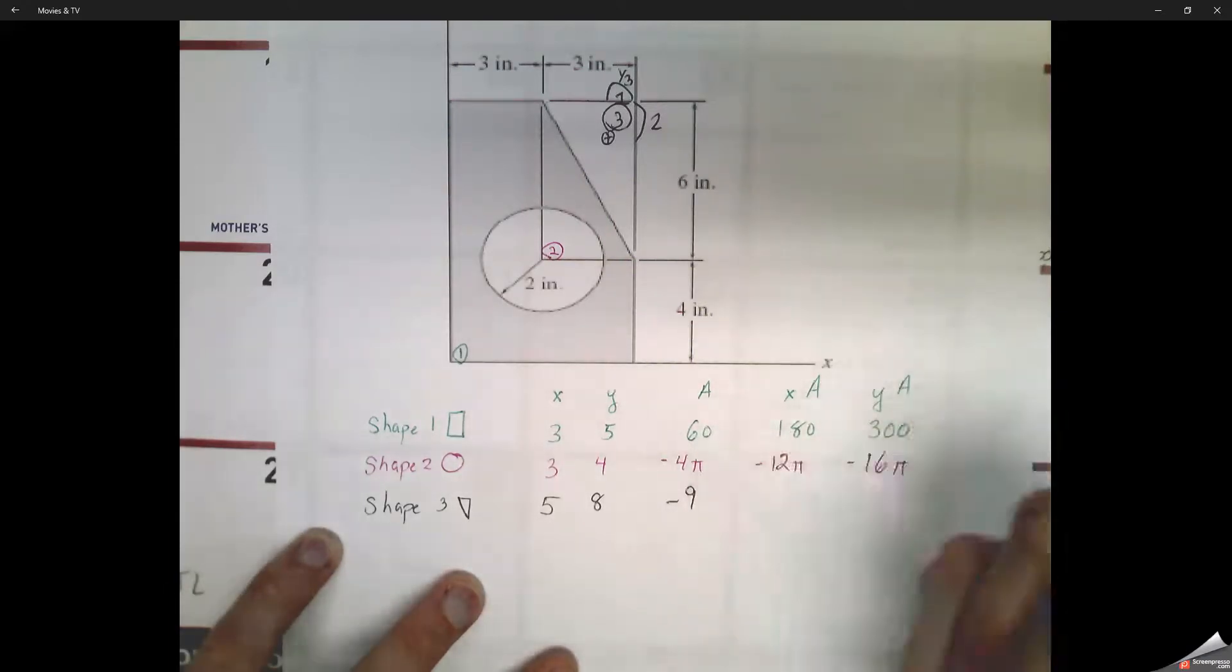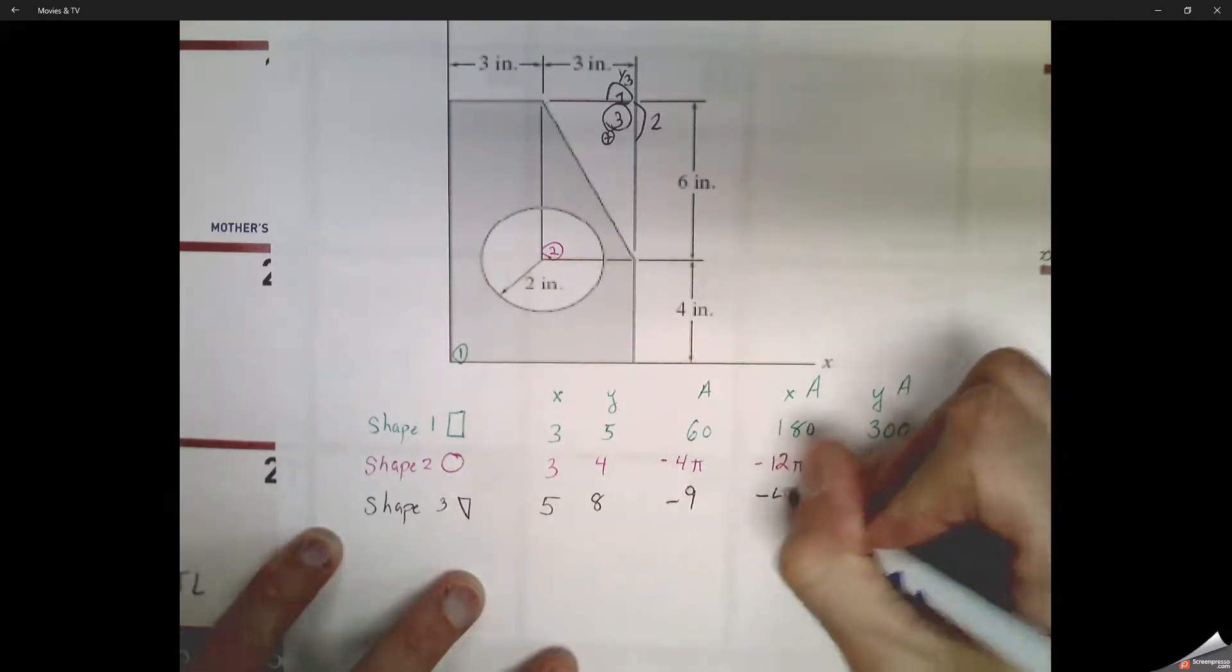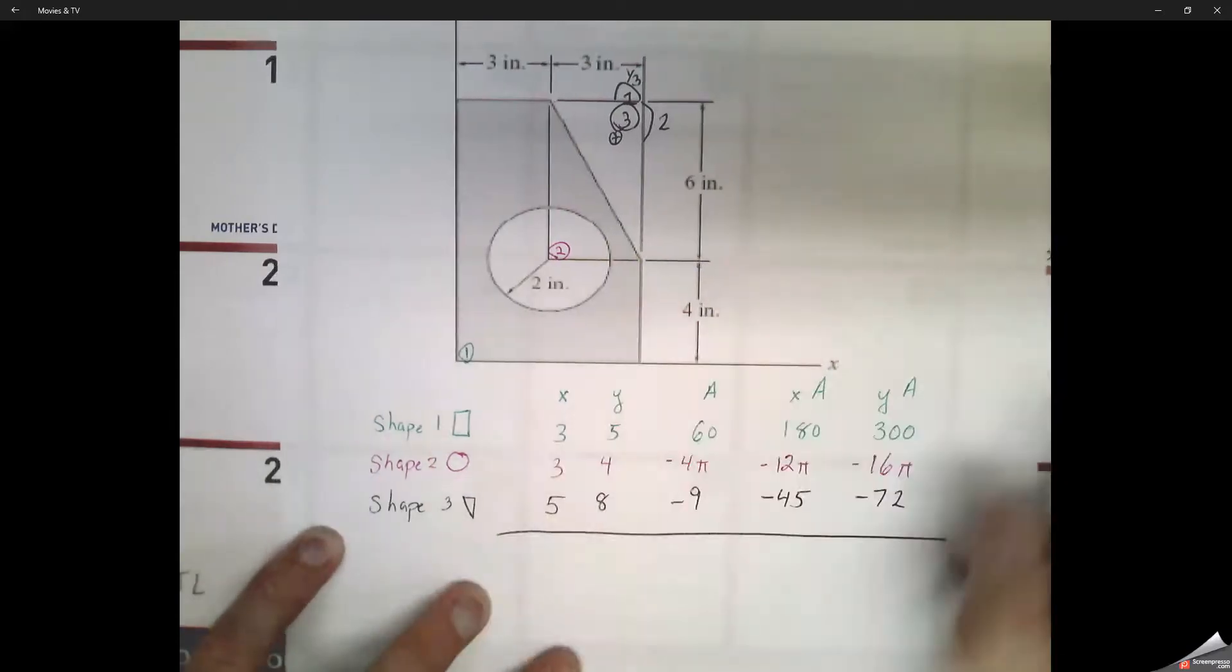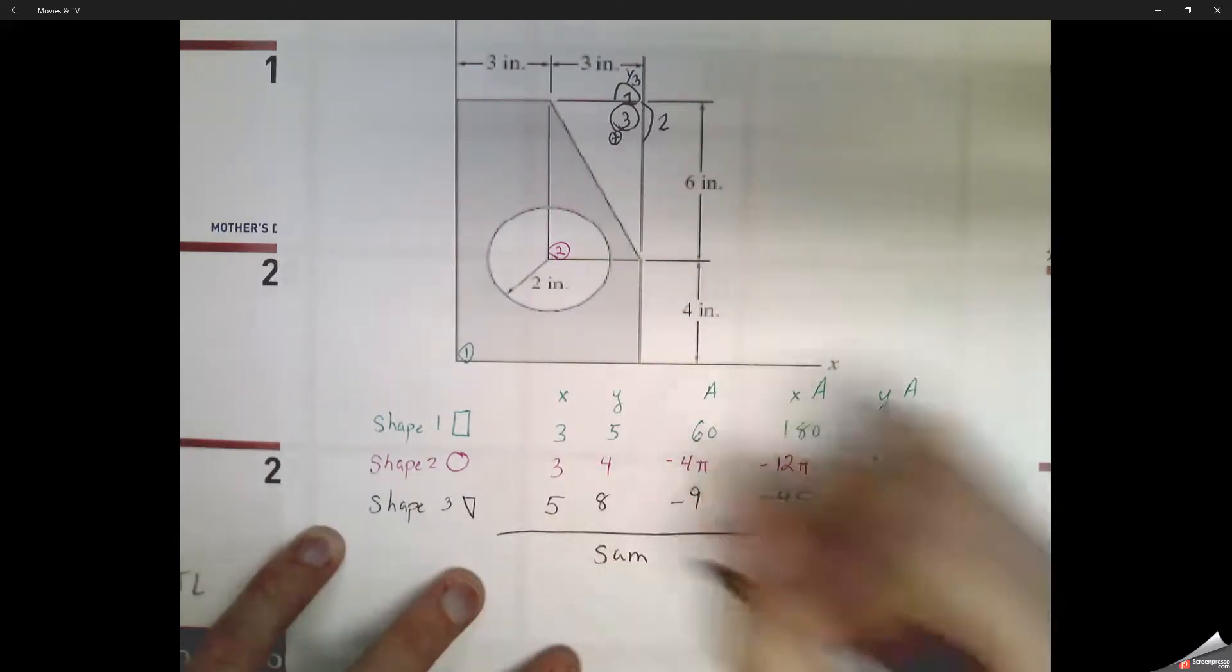Area of that shape is one half base times height, so 3 times 3 is 9, so cut that out, negative there. So 5 times 9 is negative 45. 8 times 9 is negative 72.